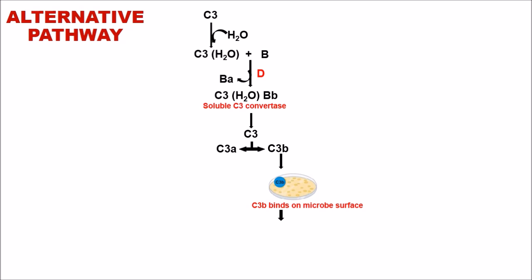In the next step, the factor C3b binds with factor B again, and this factor B again in presence of factor D is cleaved into a small fragment Ba and Bb. The Bb again binds with C3b and forms a complex C3bBb.